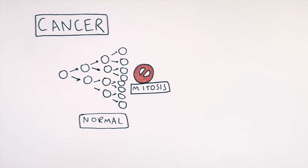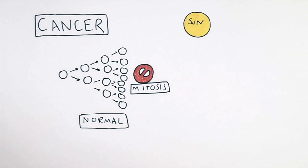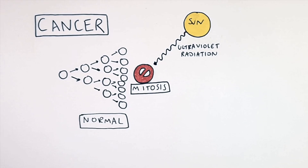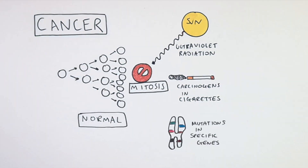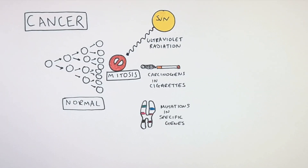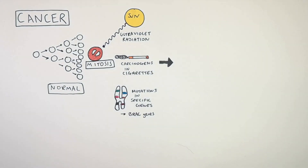There are certain factors called carcinogens that can affect the DNA that controls whether or not mitosis stops. These include UV radiation from the sun and carcinogens in cigarette smoke. Other factors are genetic — for example, some people have the BRCA gene, which can cause increased risk of cancer in the cervix and in the ovaries.